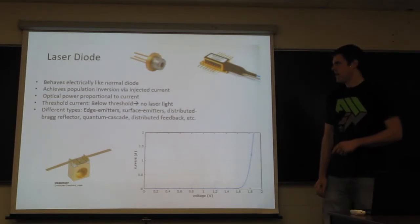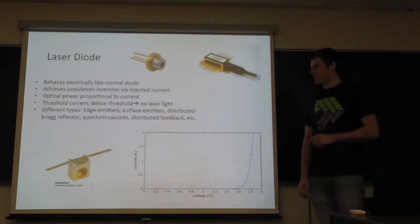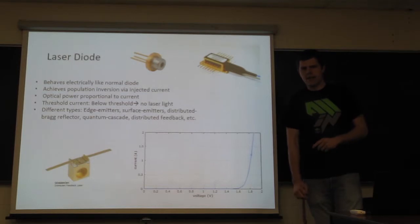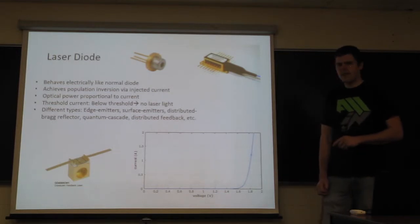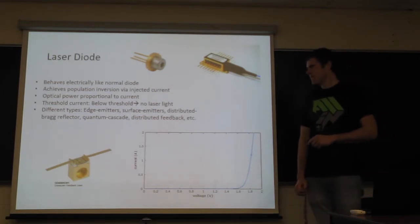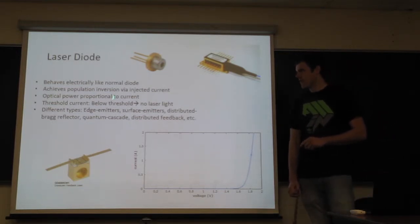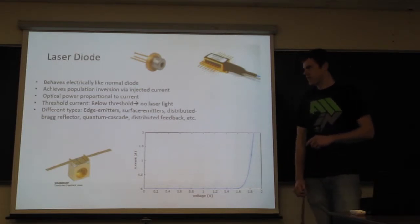So a laser diode, electrically, is very similar to a normal diode. And for lasers, the way you pump it to get population inversion is via the injection current into the diode. The optical power is proportional to the current, not the voltage through the diode.